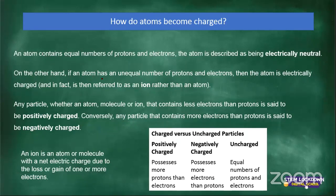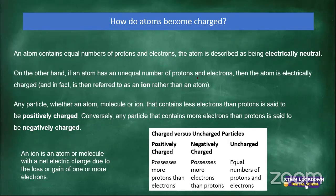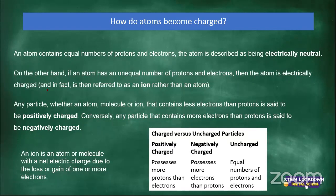On the other hand, if an atom has an unequal number of protons and electrons, they are not equal. For example, if you hold five marbles in each hand — five protons in one and five electrons in the other — and remove two marbles from one hand, there's now an unequal number. This imbalance causes the atom to become charged. When there is an imbalance of electrons and protons, we say the atom becomes charged, and it is no longer called an atom — we call it an ion.